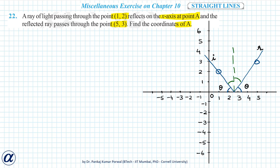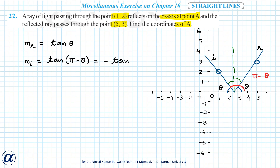If I call this angle theta, this angle will also be theta. So the angle that the reflected ray makes with the positive direction of the x-axis is theta, and the slope of the reflected ray is tan(theta). Similarly, the incident ray makes an angle of pi minus theta with the positive direction of the x-axis, so the slope of the incident ray is tan(pi minus theta) = minus tan(theta). Thus the relation between slopes is: m_i equals minus m_r.